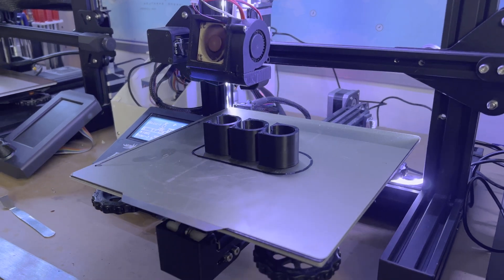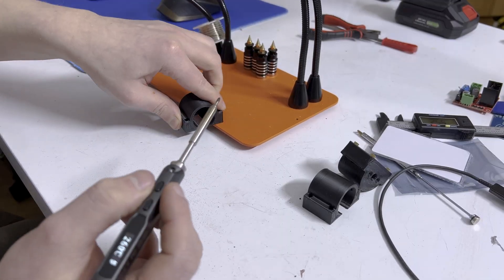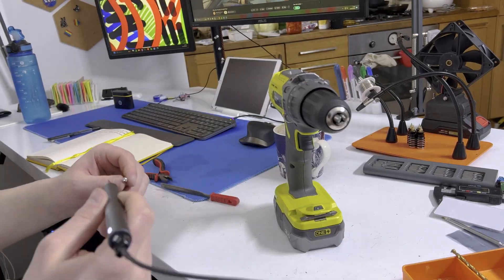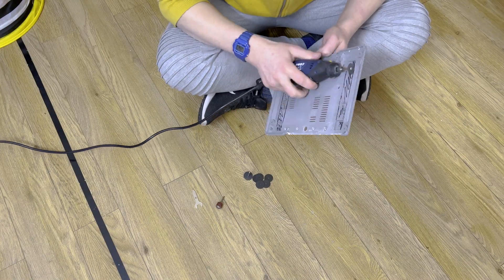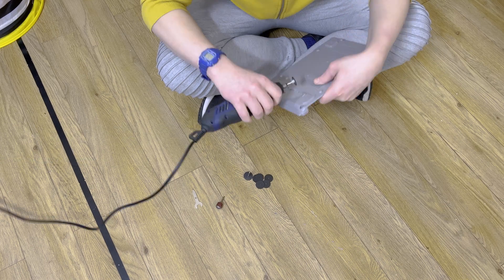Soon enough everything was printed. I started off by screwing on the motors and then I put in the threaded heat inserts and yes I did have to sand them down. I've become very efficient at it. I can now do two at a time.